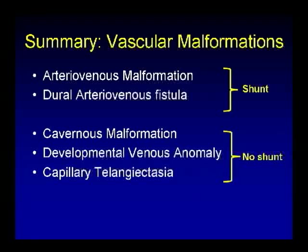In summary, the vascular malformations: those with a shunt include AVMs, which are congenital, and dural arteriovenous fistulas, which are usually acquired. Then the no-shunt lesions. Those carrying a risk of hemorrhage are highlighted separately from those that do not.